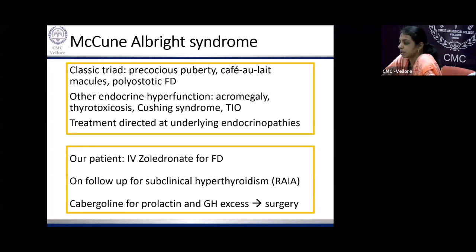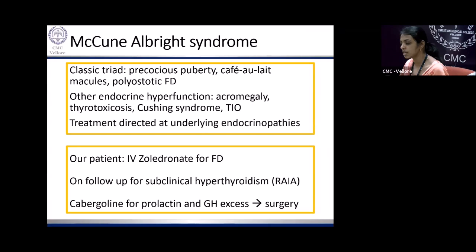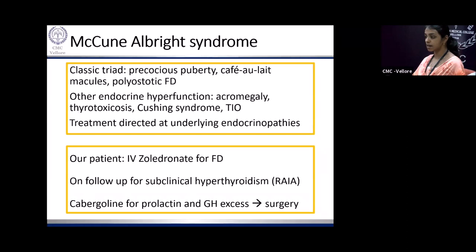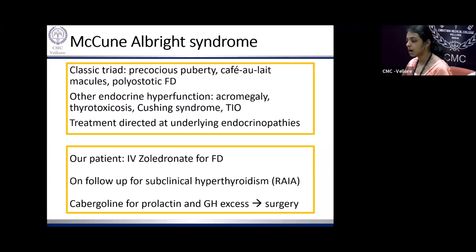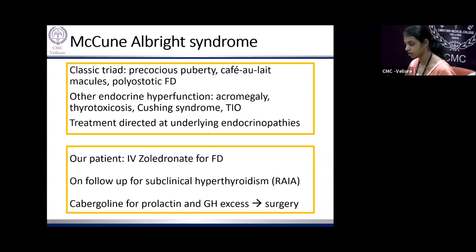Sometimes fibrous dysplasia is not as innocuous as it looks — we need to look for syndromic associations. Examine the patient for café-au-lait macules, acral enlargement, menstrual history, precocious puberty, irregular cycles, galactorrhea suggesting prolactin elevation, and clinical evidence of thyroid hormone excess. McCune-Albright syndrome classic triad: precocious puberty, café-au-lait skin lesions, and polyostotic fibrous dysplasia. In addition, there can be endocrine hyperfunction resulting in acromegaly, thyrotoxicosis, rarely Cushing syndrome, and tumor-induced osteomalacia. Our patient was given bisphosphonates with symptomatic improvement and will undergo iodine ablation; she is currently on cabergoline.